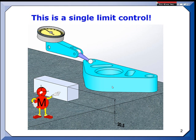The other advantage is you're getting variables data for process control. You can keep track of the highest points and monitor if your process is getting closer to 20.5, so you can correct your process before you ever make a bad part.